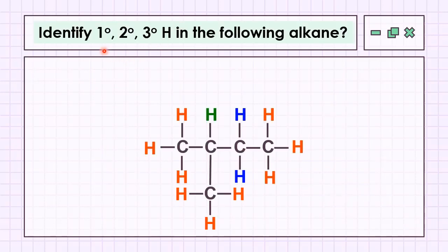Let's try to identify the primary, secondary, and tertiary hydrogen in the following alkane. So we have hydrogen highlighted in red, green, and blue. They all belong to different classes of hydrogen.